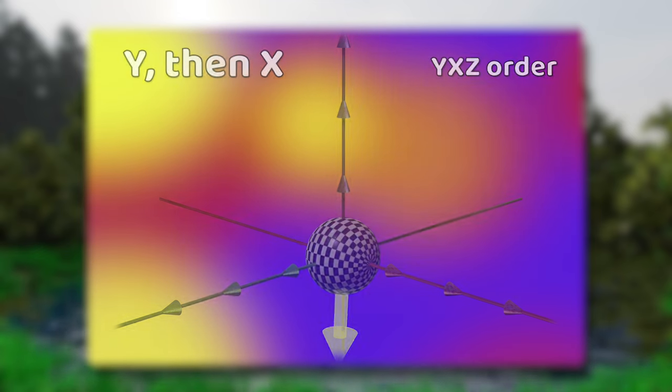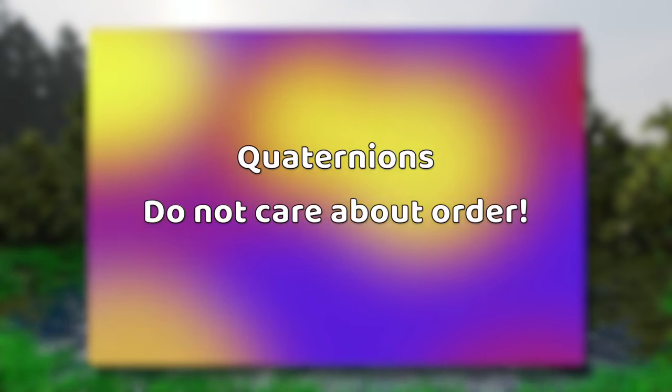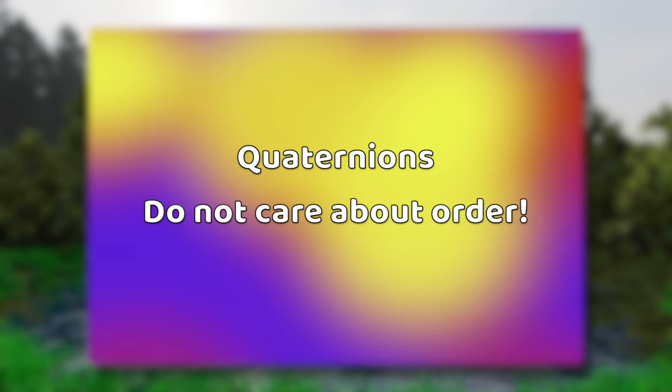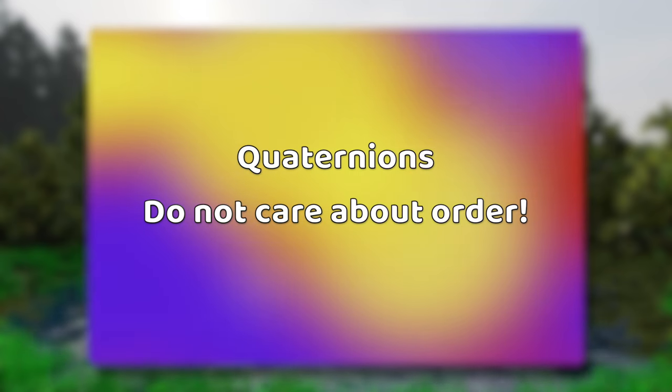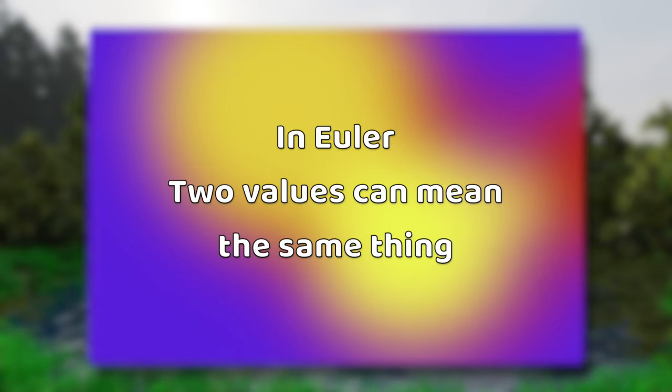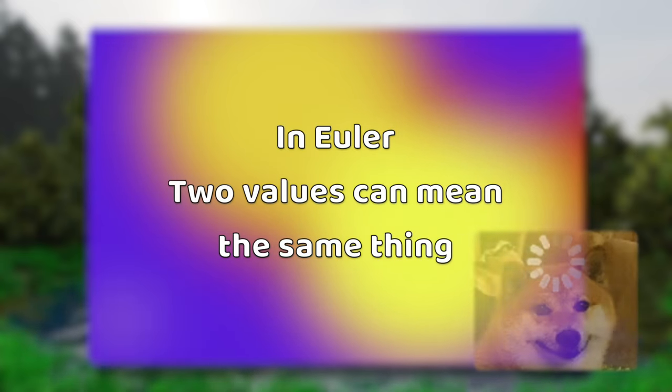Quaternions do not care about order. Therefore, every set of Quaternion values represents one and only one orientation. Order in Euler doesn't just make reading the values less useful — it can also make two different values mean the same thing.